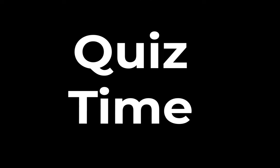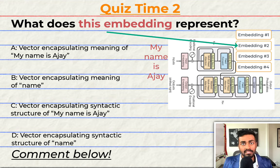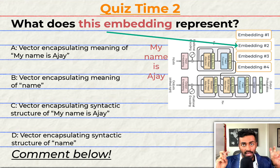Quiz time! It's that time of video again. Have you been paying attention? Let's quiz you to find out. For this transformer image, what does this embedding represent? A: It's a vector encapsulating the meaning of the sentence 'My name is Ajay.' B: It's a vector encapsulating the meaning of the word 'name.' C: It is a vector encapsulating the syntactic structure of the sentence 'My name is Ajay.' Or D: It is a vector encapsulating the syntactic structure of the word 'name.' Comment your answer down below and let's have a discussion. That's going to do it for quiz time and pass two of the explanation — but I will be back, so keep paying attention.